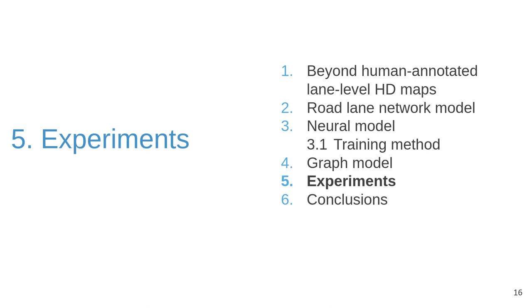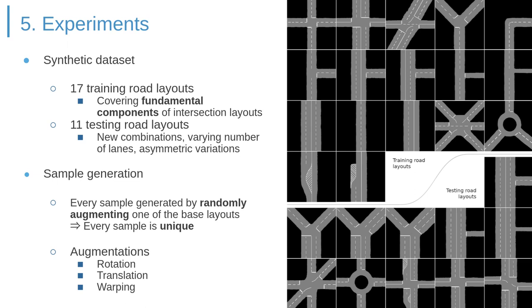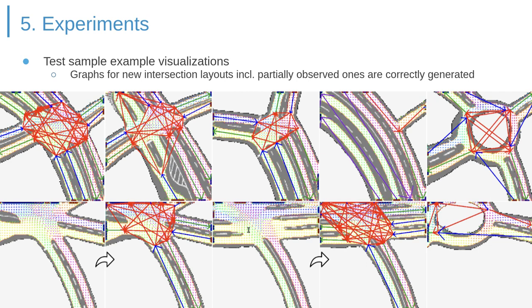The method was developed and evaluated on sets of synthetic road layouts. The training layouts constitute basic structural components forming the building blocks for the test road layouts. Each sample is randomly rotated and warped, meaning every training sample is unique — in other words, we are sampling road layouts from our training and test distribution. A visual demonstration on new test road layouts shows that both new asymmetric and partially observed intersections are correctly predicted.